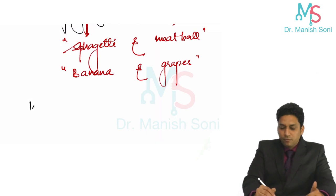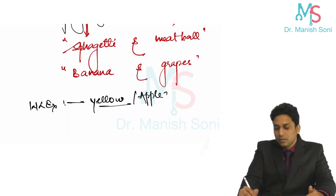Next is Wood's lamp examination. This we have already discussed. The color which is seen is yellow or apple green. The fluorescence is yellow or apple green.